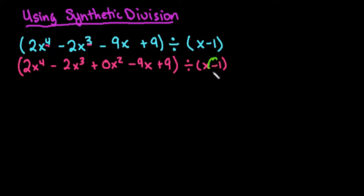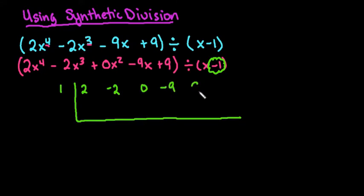So remember what we do is we take this value here and we change the sign, and that's the number that goes on the outside. So I would put the 1 on the outside and then inside the parentheses I would do the 2, the negative 2, I do have to have the 0, the negative 9, and the positive 9.